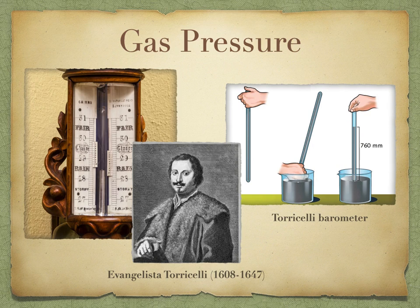What you now have are two pressures working against each other: the pressure of the liquid mercury in the tube pushing mercury out, and atmospheric pressure pushing on the mercury in the bowl, pushing mercury up into the tube. This establishes a gradient — a difference between a high and low value. Matter always moves down a gradient, so the mercury falls until the column exerts the same force as atmospheric pressure outside.